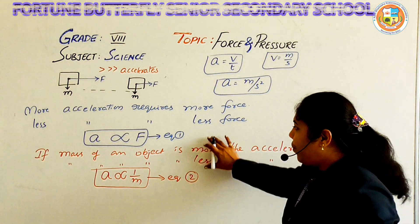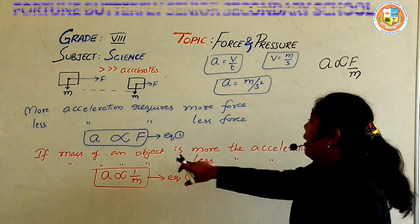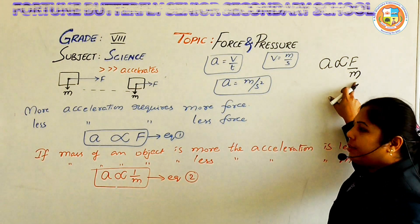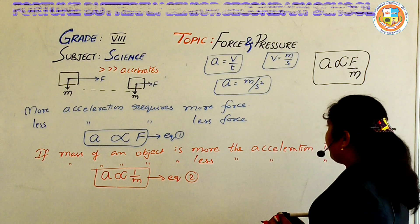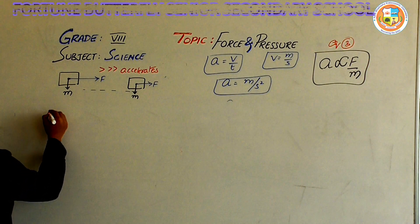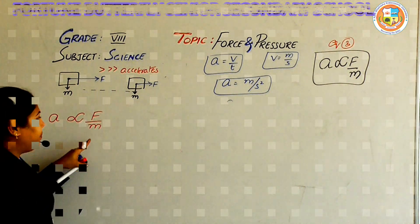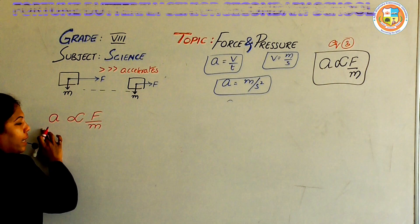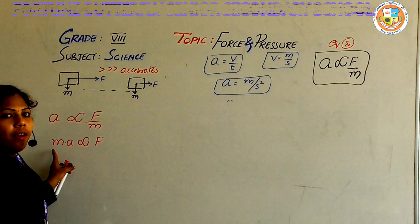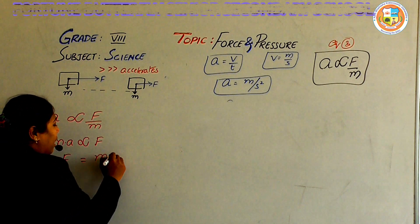From these two equations, acceleration is directly proportional to F and inversely proportional to M, so acceleration is directly proportional to F divided by M — this is equation number three. Sending mass to the other side, it becomes multiplication: M × A is directly proportional to F. That means force is equal to the product of mass and acceleration.